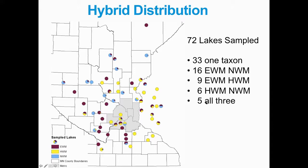To form hybrid water milfoil, you'd need both parent taxa — Eurasian and northern water milfoil — to interbreed. In some lakes, we're losing the parental taxa: either they've gone extinct or they're at such low frequency we cannot detect them, while hybrid has become dominant or more common in those lakes.